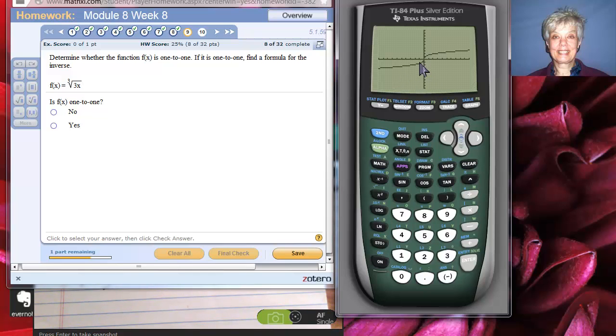This never flattens out. It always tends downward. This always tends upward. So this function is constantly increasing on its domain, which is one of the definitions of a 1 to 1 function. Either constantly increasing on its domain or constantly decreasing on its domain. So, yes, this is a 1 to 1 function.